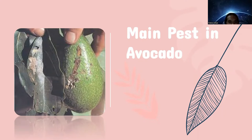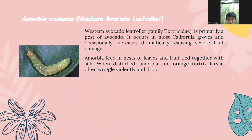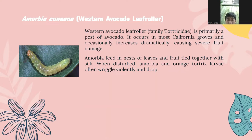The first main pest in avocado is Amorbia cuneana, or Western avocado leafroller. Western avocado leafroller, family Tortricidae, is a premier pest of avocado, occurring in most California groves and occasionally causing severe damage. Amorbia feeds in nests of leaves and fruit tied together with silk. When disturbed, Amorbia and orange tortrix larvae often wriggle violently and drop.